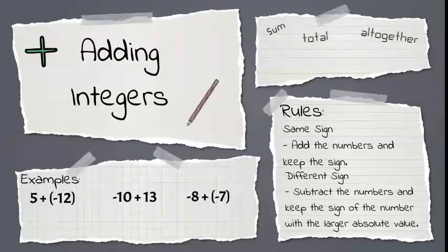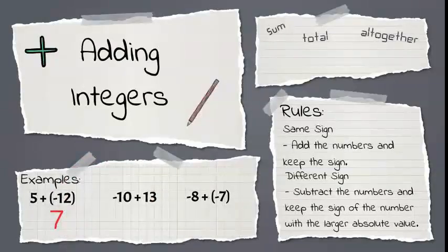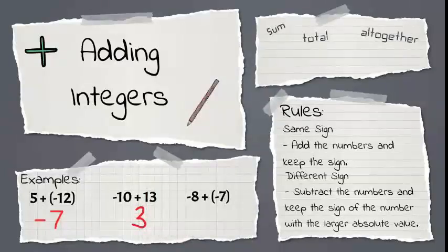Let's look at some examples. 5 plus negative 12 — different signs, so let's subtract. 12 minus 5 is 7, and negative 12 has a bigger absolute value, so my answer is negative. Next, we have negative 10 plus 13. Different signs again, so subtract. We get 3, and 13 has a larger absolute value, so our answer is positive.